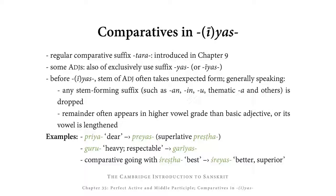A form that declines fairly similarly to the perfect active participle in WAS is comparatives in YAS or IAS. We already encountered the regular comparative suffix TARA, introduced in Chapter 9, which is added fairly straightforwardly onto the adjective stem. For example, from the adjective PRIYA, meaning 'dear,' we get the comparative PRIYATARA, meaning 'dearer.'